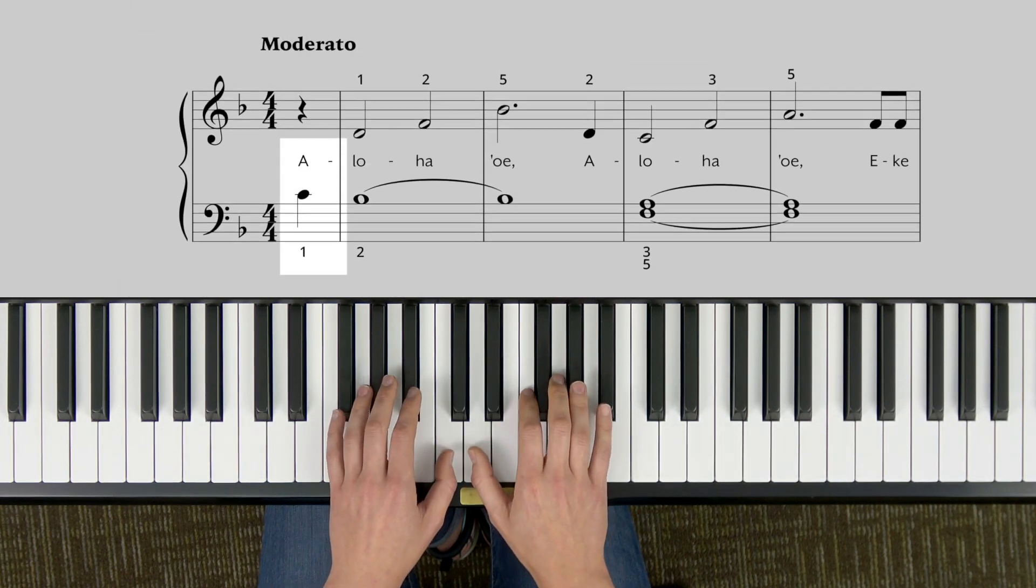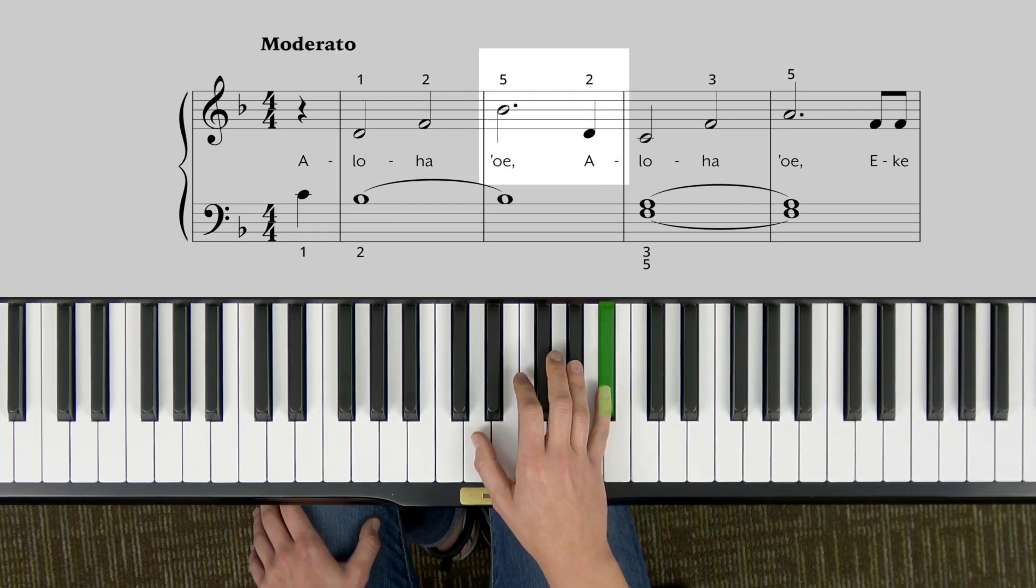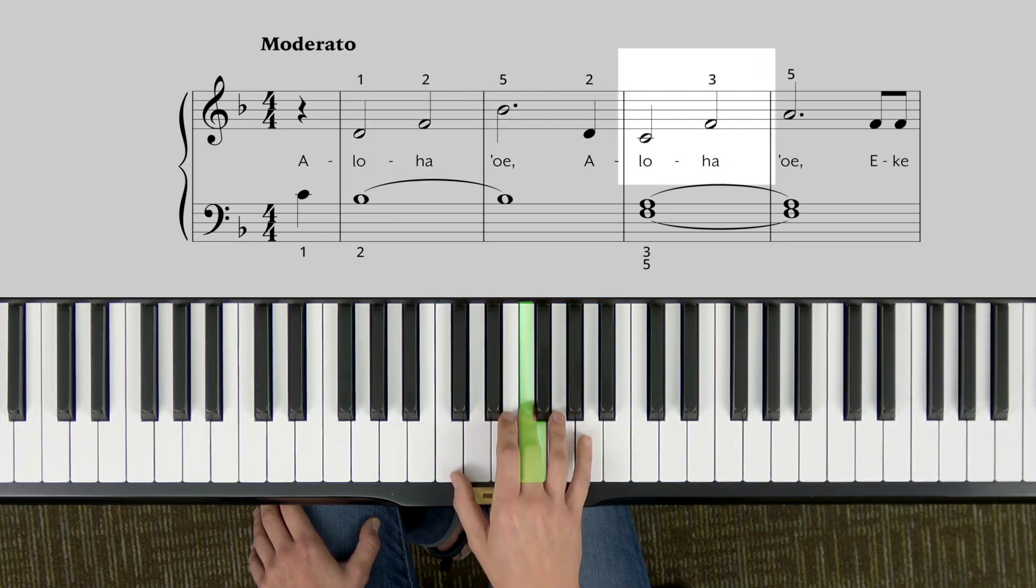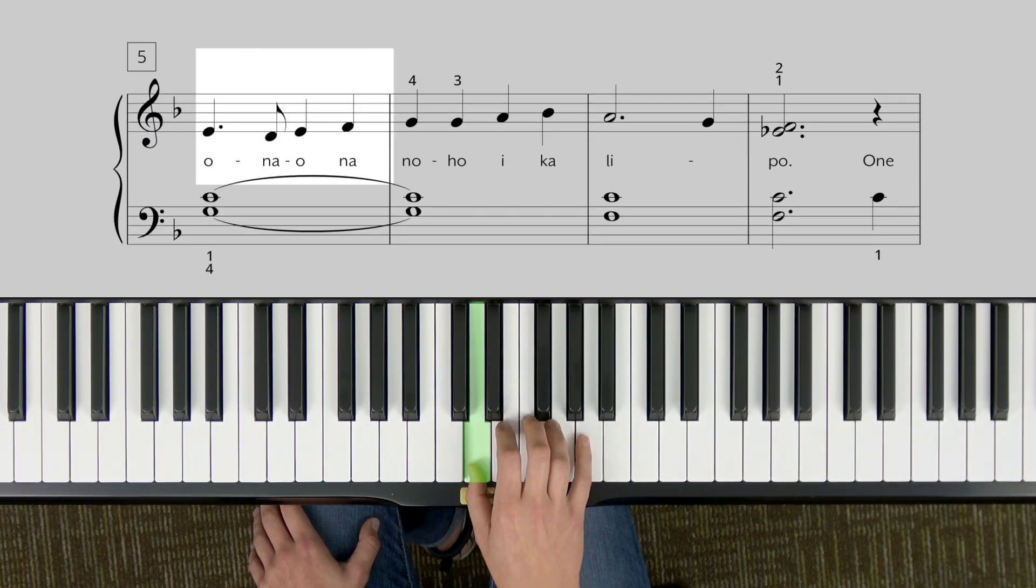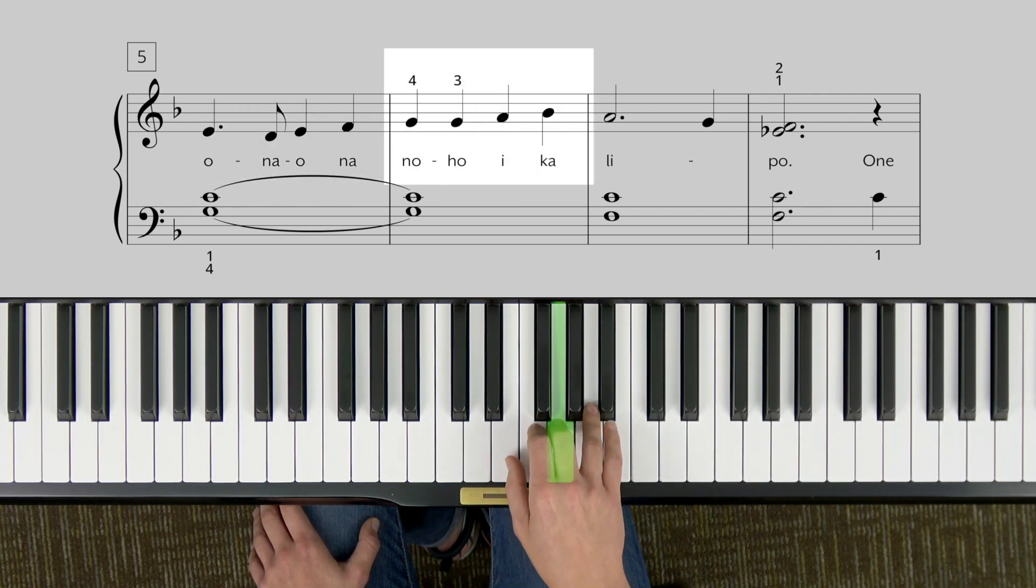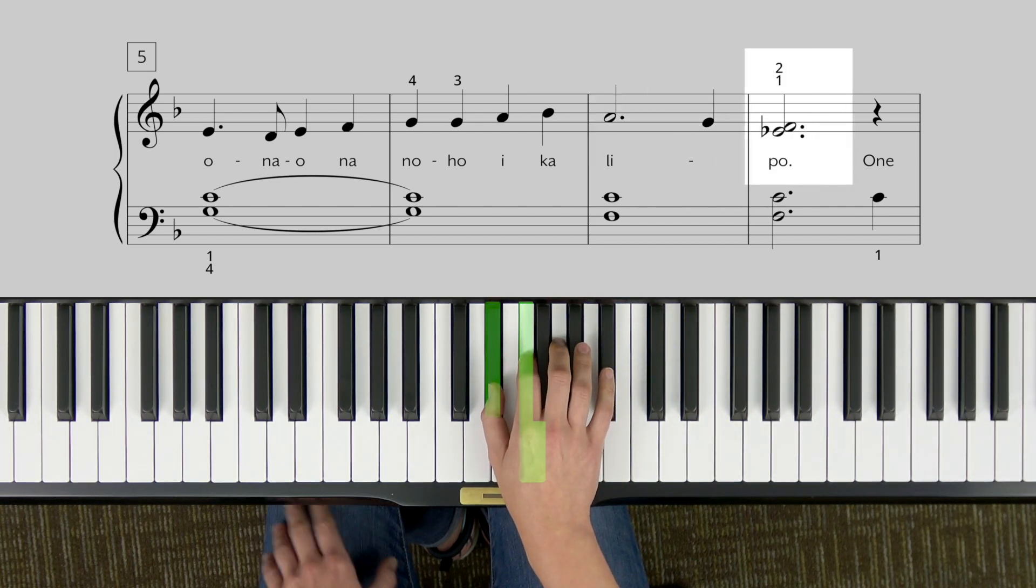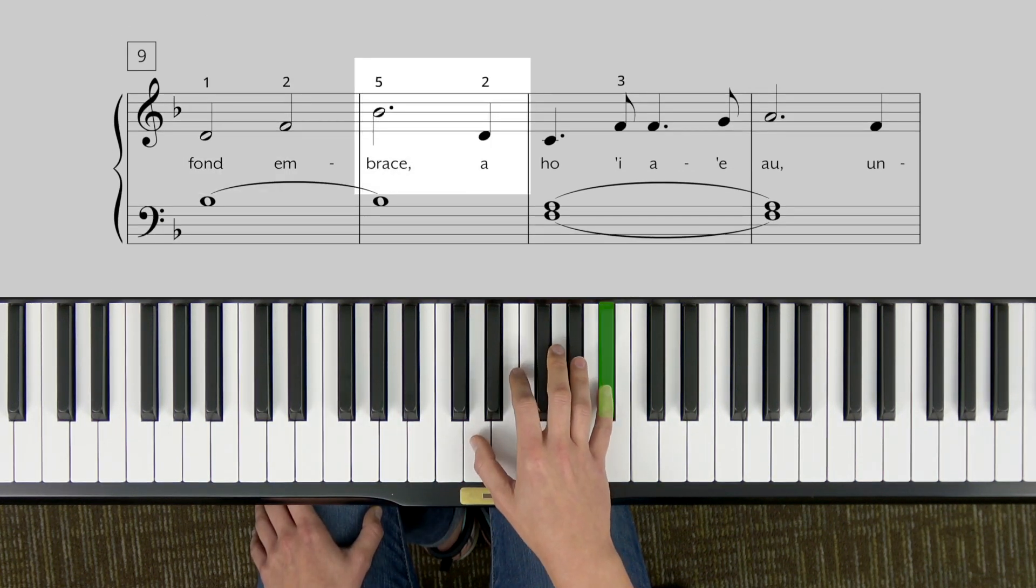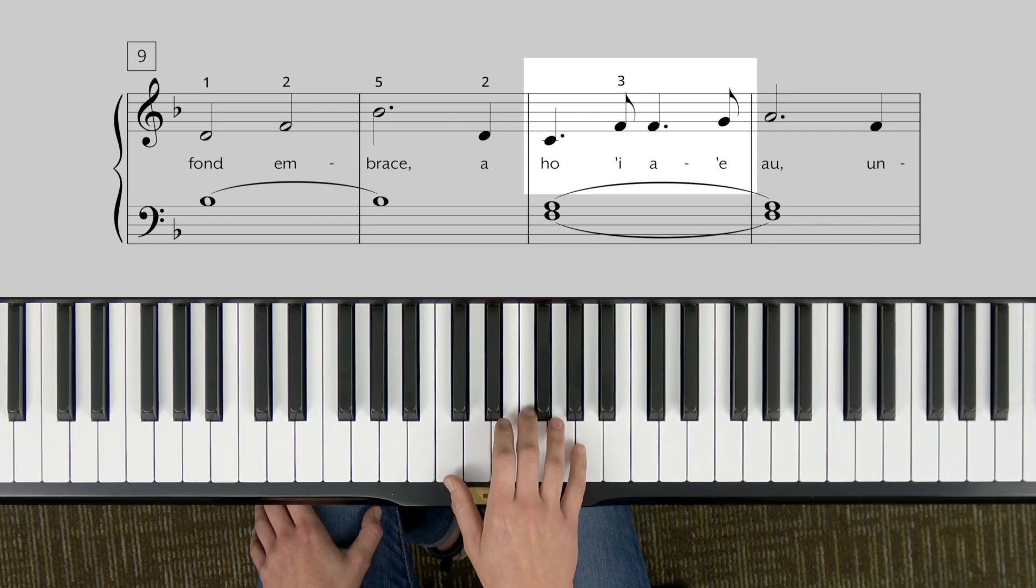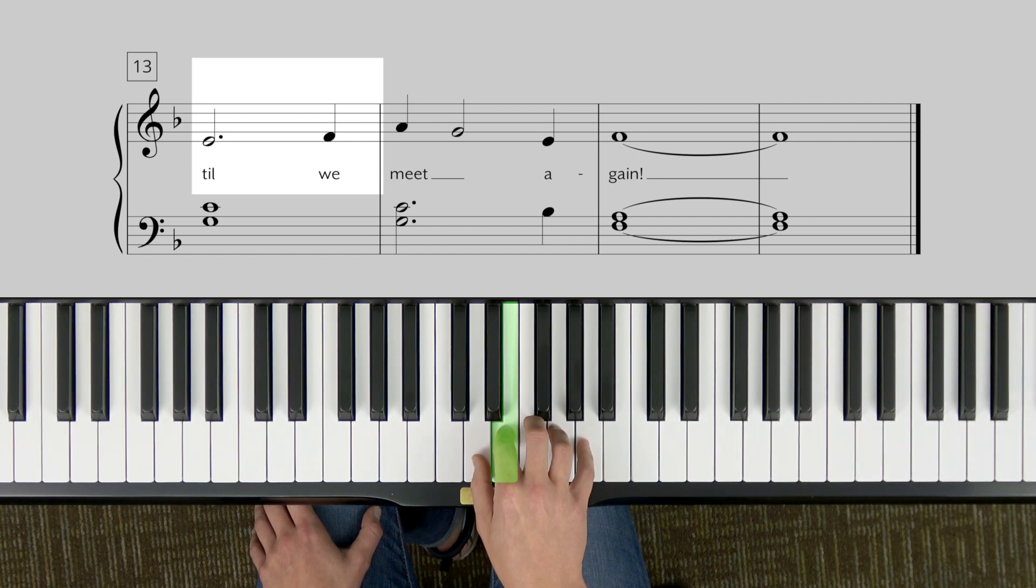As always, you can pause and rewind to practice anything. I'm going to play this from the beginning. Start with your left thumb. Aloha oi, aloha oi. Ike ona onoho, shift, i kalipo. Left hand. One fond embrace. Aoi aheu. Until we meet again.